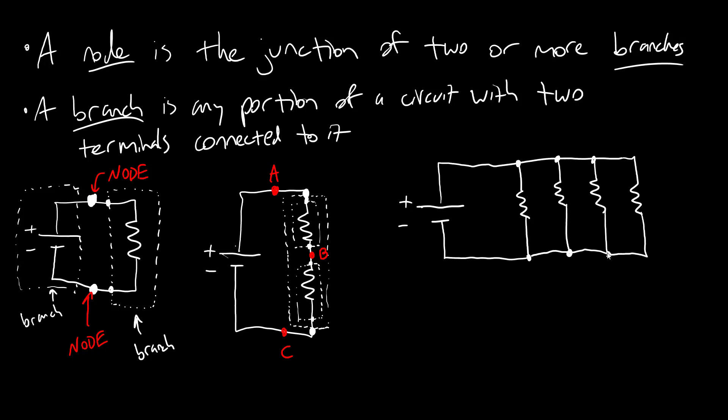And your instinct is to look at that and think, oh that's a node and this is a node and these are somehow all different nodes. And that is not correct. Okay, remember that in a circuit diagram these lines just represent zero resistance wires.